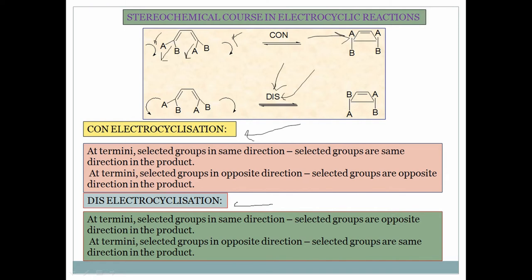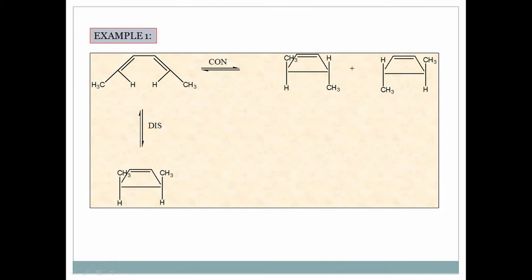For dis-electrocyclization: if both terminal groups are on the same side, after dis-electrocyclization both groups will end up on opposite sides — meaning one above the plane and one below the plane. Conversely, if the terminal groups are on opposite sides in dis-electrocyclization, they will come to the same side in the product. These rules are very crucial — you must memorize them, as they determine the product stereochemistry in both con and dis modes.